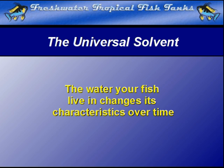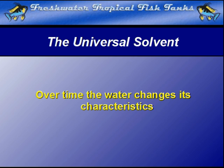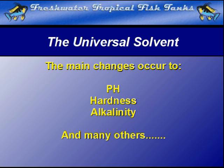If there are any substances in your aquarium that can be dissolved, you can be assured that the Universal Solvent will do its work and dissolve them given enough time. As these are dissolved into the solution, the water changes in a variety of characteristics. The main changes are to pH, hardness, and alkalinity, as well as many others. These three are most affected by the tendency of water to act as a Universal Solvent.